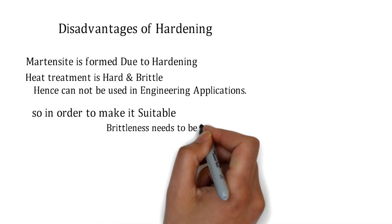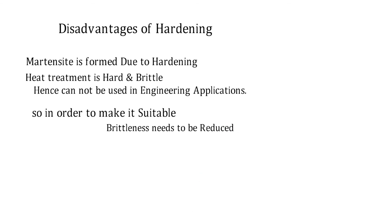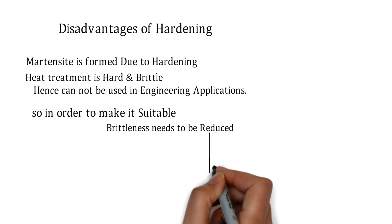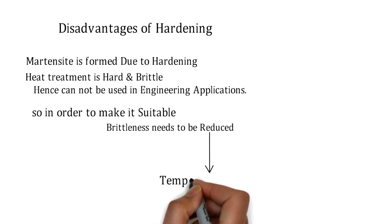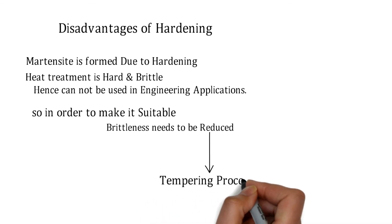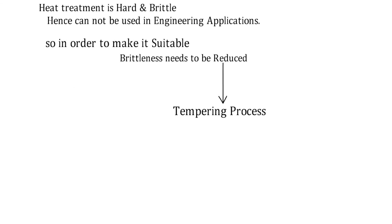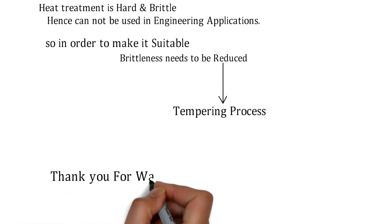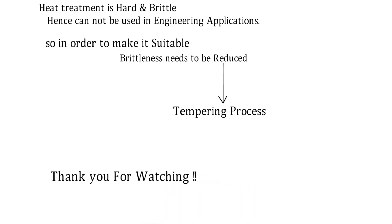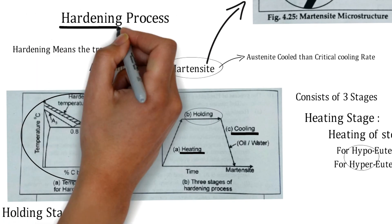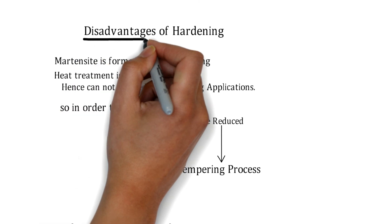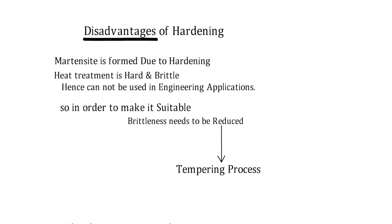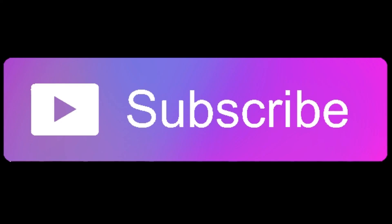In order to reduce brittleness and increase tensile strength, a further tempering process is always carried out after hardening. We will see the tempering process in detail in the next video. Thank you for watching — we covered the hardening process, its stages, purposes, and disadvantages. Please subscribe to the channel AMMI.